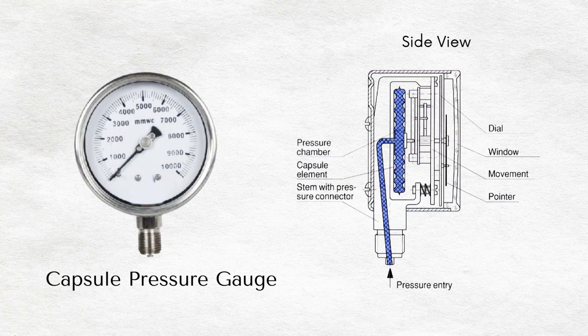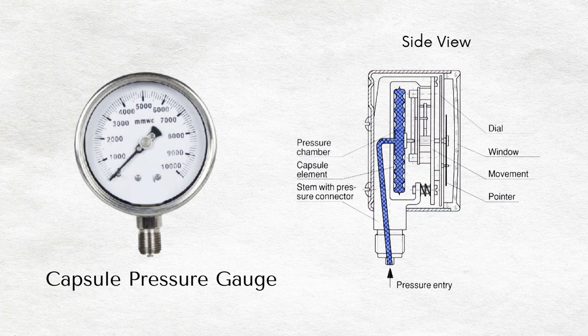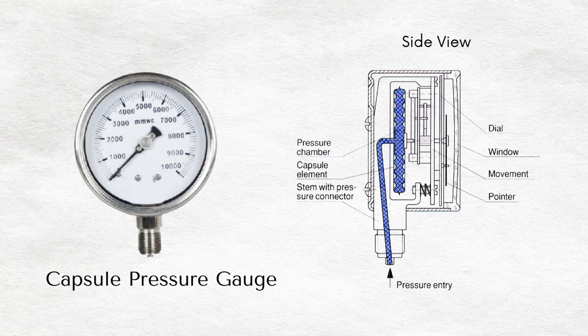Capsule pressure gauge. A capsule pressure gauge has two thin concentric corrugated diaphragms that are sealed tightly together around their circumferences. One of the diaphragms has a hole in the center that allows the medium to enter. When pressure is applied, the diaphragms expand or contract.